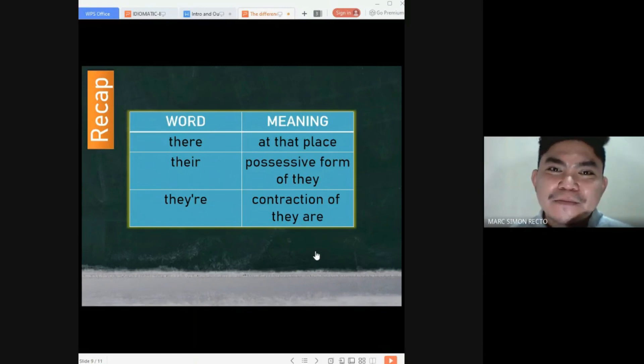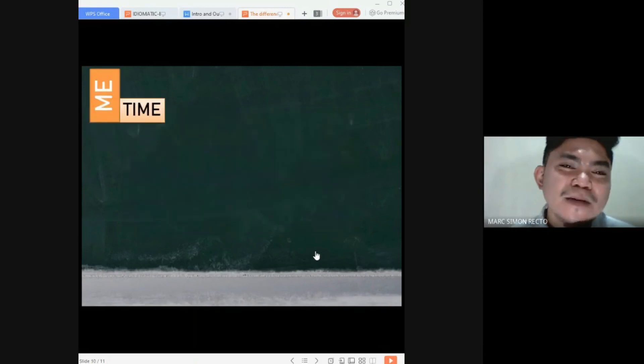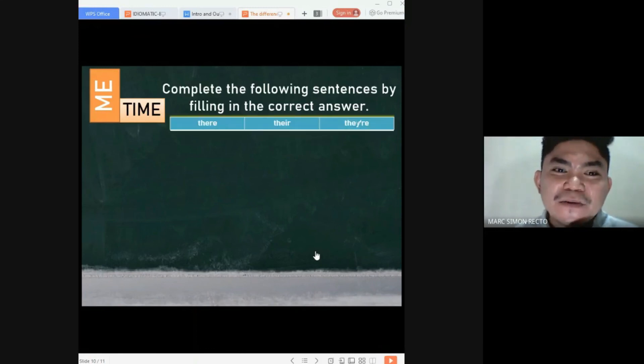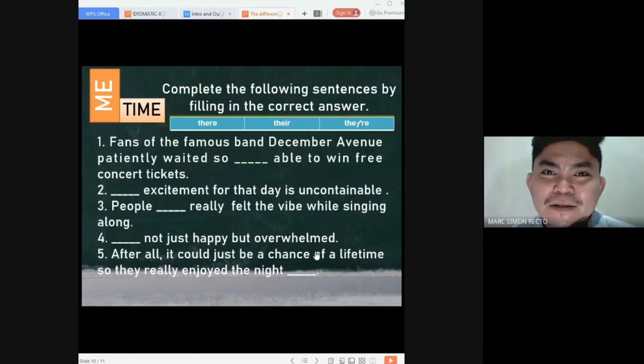This will be the general me time. The instructions, complete the following sentences by filling in the correct answers. I have here the choices there, there, and there. And I have here five sentences. You may pause or stop the video to answer the following sentences. You do it now.